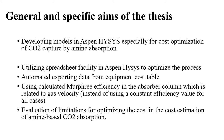Another specific aim is using a calculated Murphree efficiency in the absorber column, which is related to gas velocity, instead of using a constant efficiency value for all cases. We also evaluate the limitations for optimizing the cost in the cost estimation of amine-based CO2 absorption.